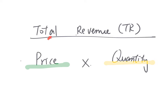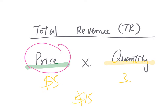The first concept is about total revenue — that is the money that the company collects from consumers. Total revenue is the price times the quantity. For example, if the selling price of an apple is $5 and we sold three pieces, the total revenue will be $15. The key thing is that price and quantity are the two elements that affect total revenue.